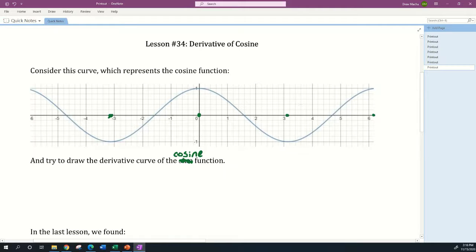This function looks like the sine function, so where it's increasing the most that derivative is going to be positive one, and where it's decreasing the most or has the steepest downward slope, it's going to be negative one for the derivative. Then I'm going to try to draw a smooth curve through these dots and see what it looks like.